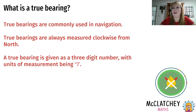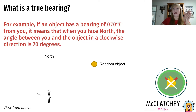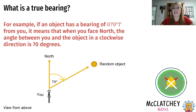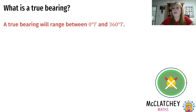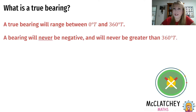We put the T at the end to recognize that it's a true bearing. For example, if an object is at a bearing of 70 degrees true from you, it means that when you face north, the angle between you and that object measured clockwise is 70 degrees. A true bearing has a range of zero through to 360 degrees true — zero and 360 are the same bearing, so you'll never get a negative bearing or one greater than 360 degrees true.